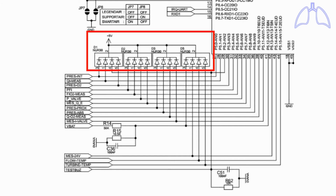Each analog input pin of port 5 is connected to the anode of a low forward voltage high-speed diode. All cathodes of these diodes are connected to positive 5 volts, to prevent the analog inputs from exceeding positive 5 volts.